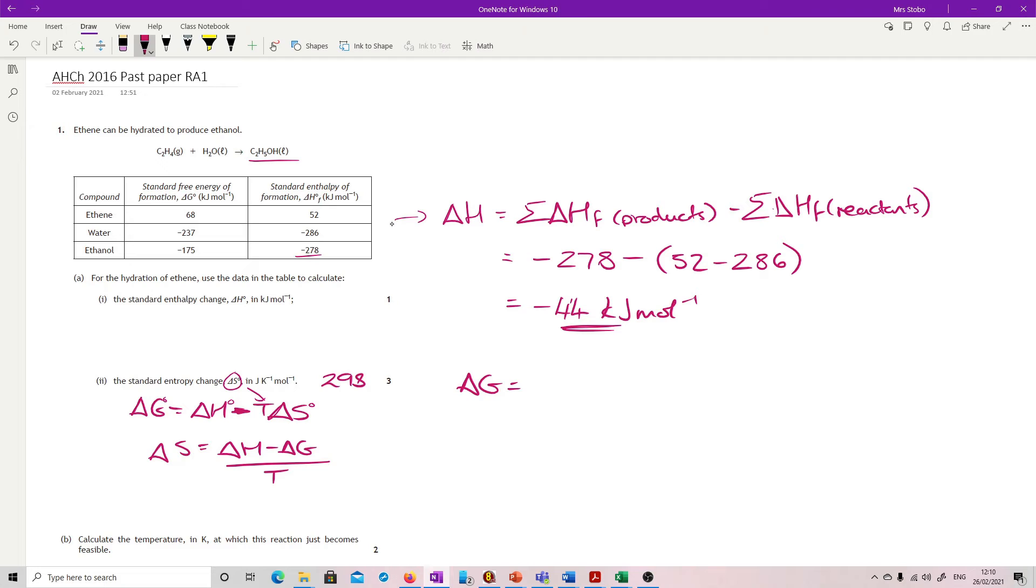ΔG, I'm going to do the same thing as I did up here with products and reactants. So that's going to be minus 175 minus 68 minus 237. So that comes out at minus 6. This is also in kilojoules. I'm just reminding myself of this because this has got to be in joules, so we've got to change.